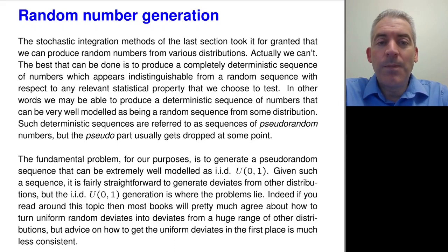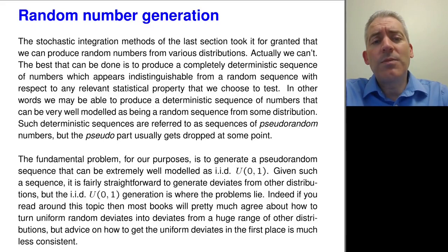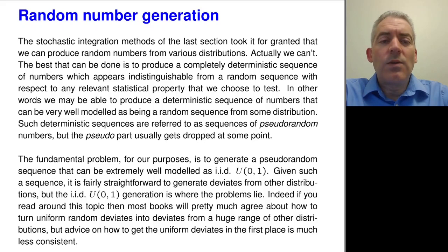It turns out that that's not a trivial problem. Computers are typically fundamentally deterministic machines, and so we don't really generate random numbers - we generate pseudo-random numbers, which are deterministic sequences that look random and ideally look completely indistinguishable from a random sequence.